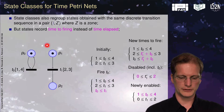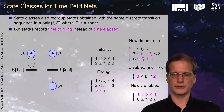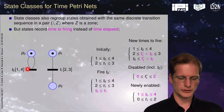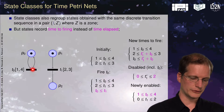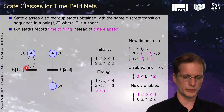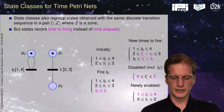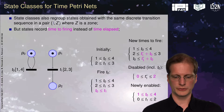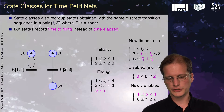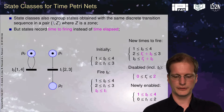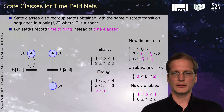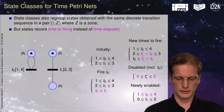We have a timed Petri net here. Instead of recording in our symbolic state the time elapsed for each transition, we record the time to fire, like a timer. Initially, T0 must fire between one and four time units, and T1 should fire between two and three time units. When we want to fire T0, we first establish that T0 should fire before T1, then make T0 the new origin for timings.